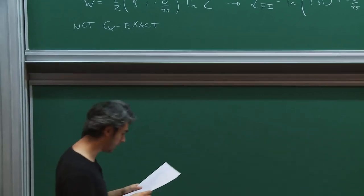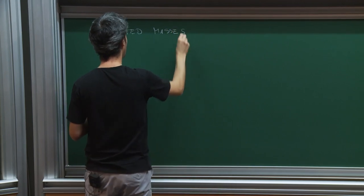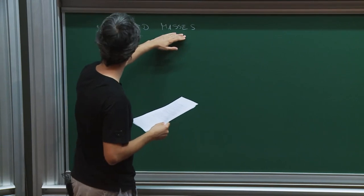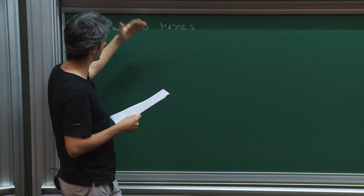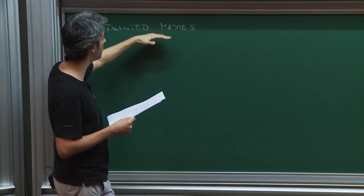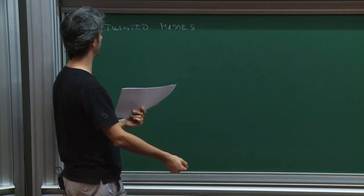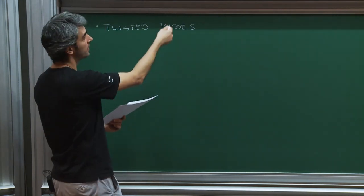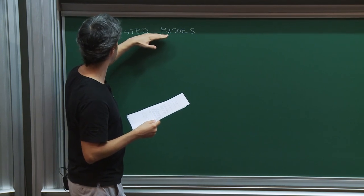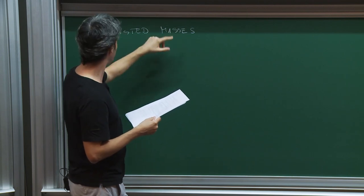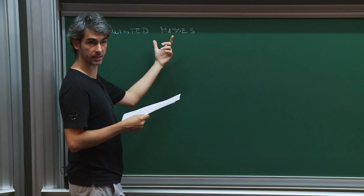Finally, we had twisted masses. Twisted masses are related to flavor symmetries — they take values in the Cartan subalgebra of the flavor symmetry group. This corresponds to the fact that when you have a symmetry, you can couple the theory to an external vector multiplet, and there is a scalar in the external vector multiplet. If you give it an expectation value and work out the effects in the Lagrangian, this corresponds to turning on some masses. These masses are associated to the central charges of the algebra, so the twisted masses deform the supersymmetry algebra and appear in central charges. Because of this reason, the answer will also depend on these twisted masses.